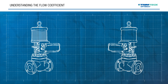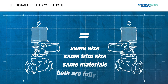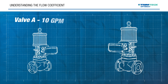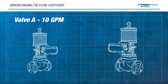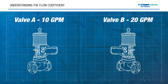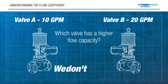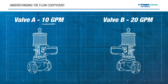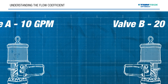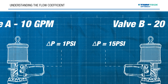To illustrate this, let's look at two identical valves — same size, same trim size, same materials of construction. Both are fully open and we observe the following: Valve A has a flow rate of 10 gallons per minute and Valve B is flowing 20 gallons per minute. If you ask which valve has a higher flow capacity, typically folks will say Valve B because it's flowing 20 gallons per minute. But the real answer is that we don't know. We take a closer look and find that Valve A has a 1 psi pressure drop across it and Valve B has a 15 psi pressure drop across it.